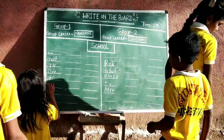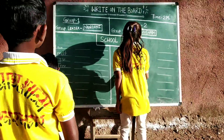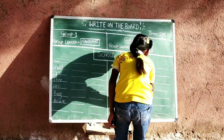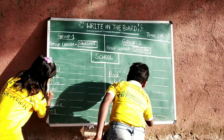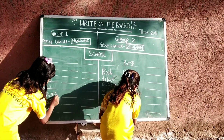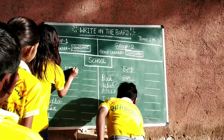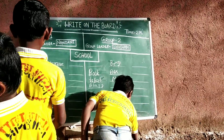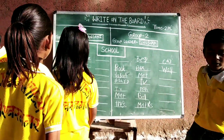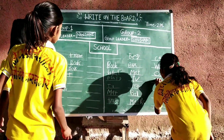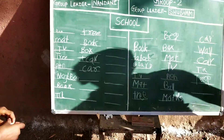Write one word, one student. Don't make mistakes in writing. Write fast. One minute is over. Now the countdown: 10, 9, 8, 7, 6, 5, 4, 3, 2, 1 — stop! Stop your writing.